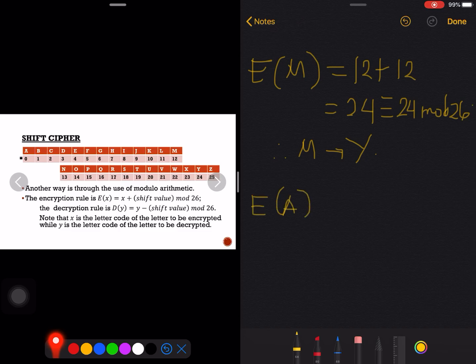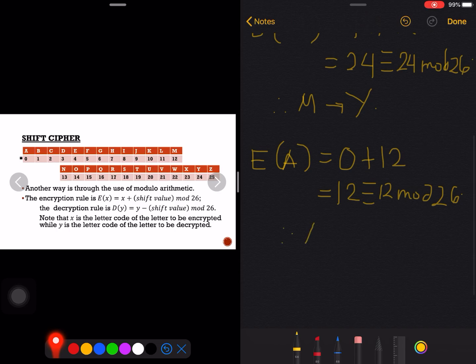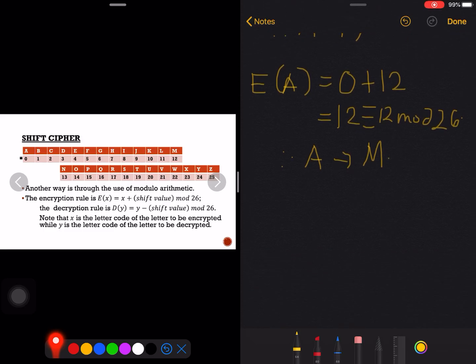So M using key of 12 would become Y. Next we are to encrypt this time letter A. A has a letter code of 0, then we are to add the shift key or shift value that we have, which is 12. Of course the answer there is 12, and applying modulo 26, the answer is still 12. Therefore A would become what letter? That would be the letter that has letter code 12, and that is letter M.